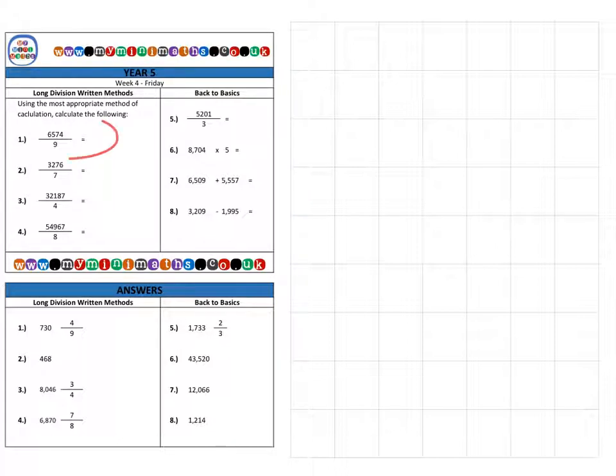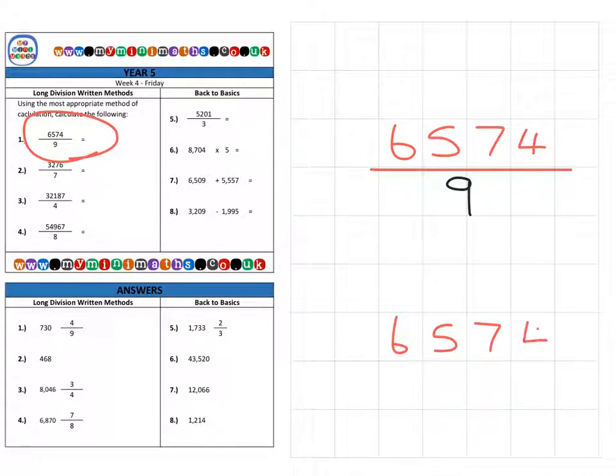First of all, on to question one, which is 6,574. And we're going to divide that by nine. So we can place this into our formal short method down at the bottom.